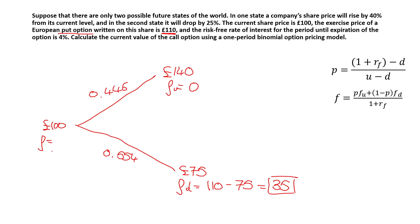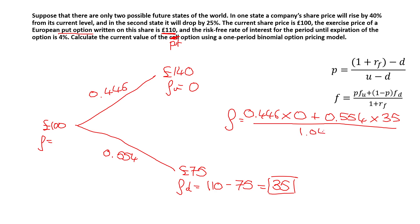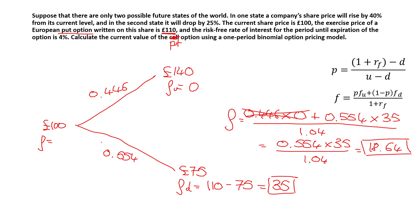Now we calculate the current value of the put option using the same formula: f = (p × fu + (1 − p) × fd) / (1 + rf) = (0.446 × 0 + 0.554 × 35) / 1.04. Since anything times zero is zero, this simplifies to (0.554 × 35) / 1.04 = £18.64. Therefore, the current value of the put option is £18.64.